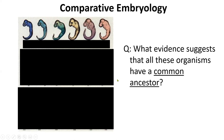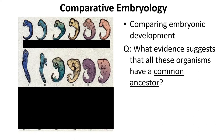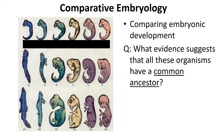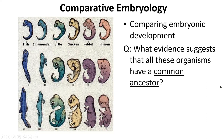Later on in development you can start seeing some differences, and even further on, by the bottom picture you can tell the difference between the turtle and the chick and the human and the fish. But you couldn't early on. So this gives us evidence that we had a common ancestor, because in early embryonic development these organisms all look similar.